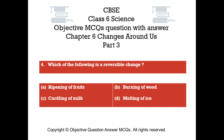Question number 4. Which of the following is an irreversible change? Option A, ripening of fruits. Option B, burning of wood. Option C, curdling of milk. Option D, melting of ice.